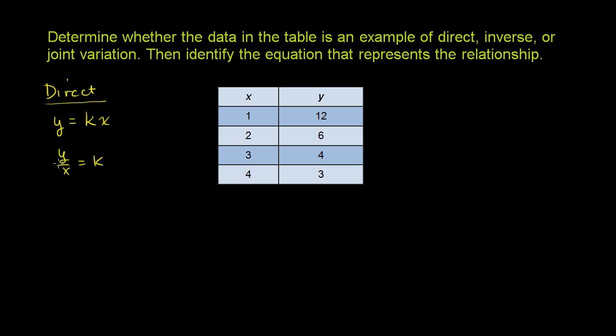So the ratio between y and x is a constant. You could go the other way around. You could also say that x is equal to some constant, not going to be the same constant, times y.